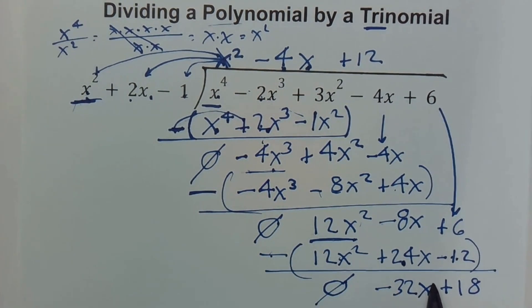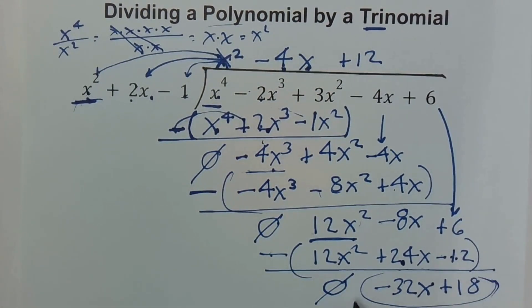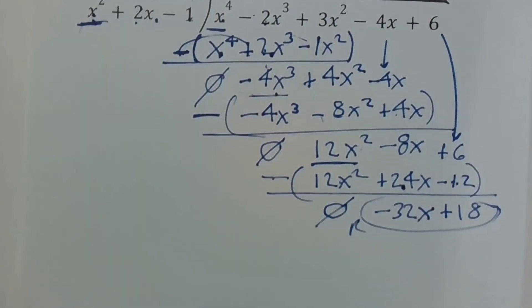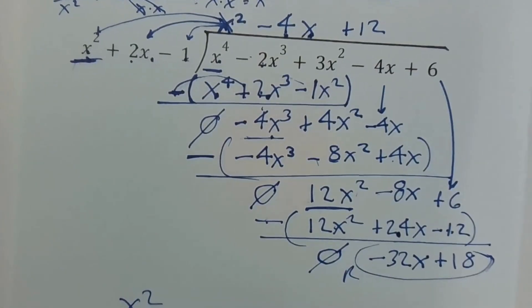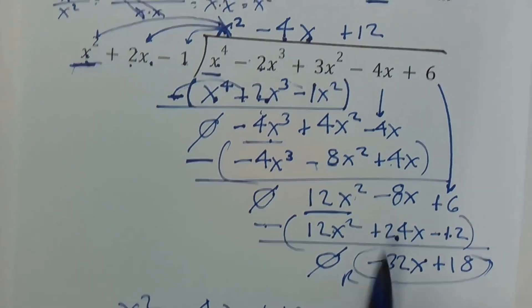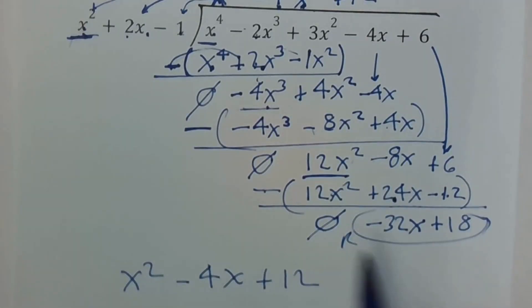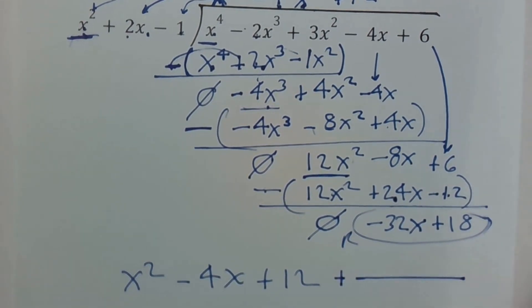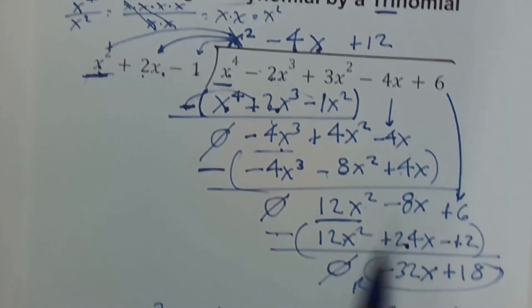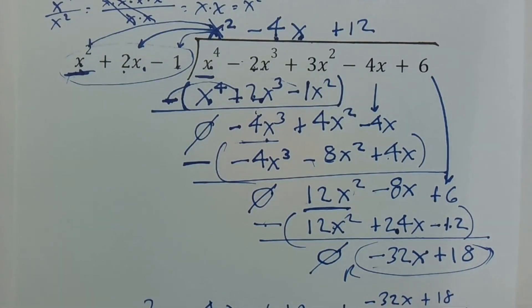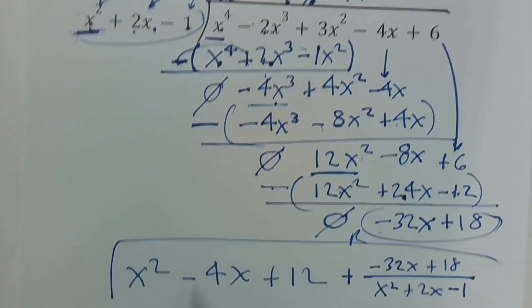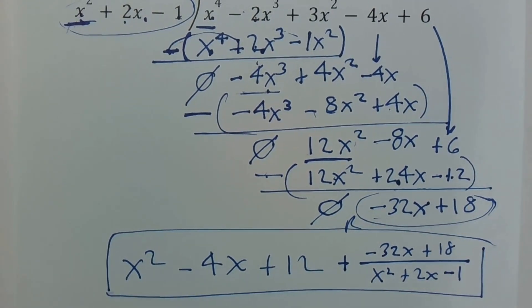Negative 32x plus 18 — since there's no x² to divide into, we are done, and this is our remainder. So the answer is what's on top: x² minus 4x plus 12, plus the remainder written as a fraction: negative 32x plus 18, over the original denominator x² plus 2x minus 1. This is the complete answer to the division problem.